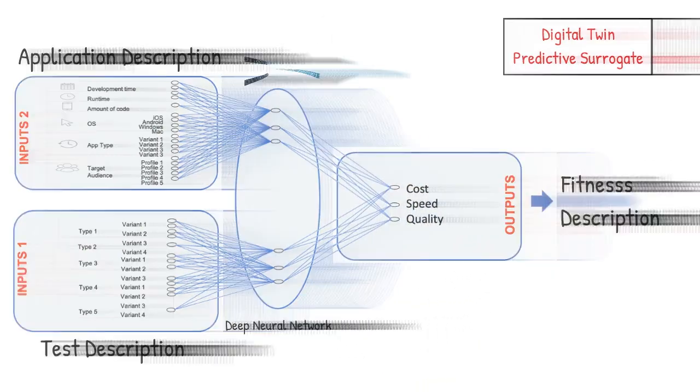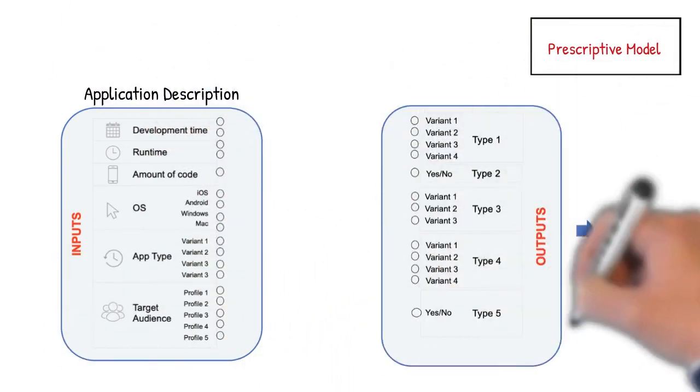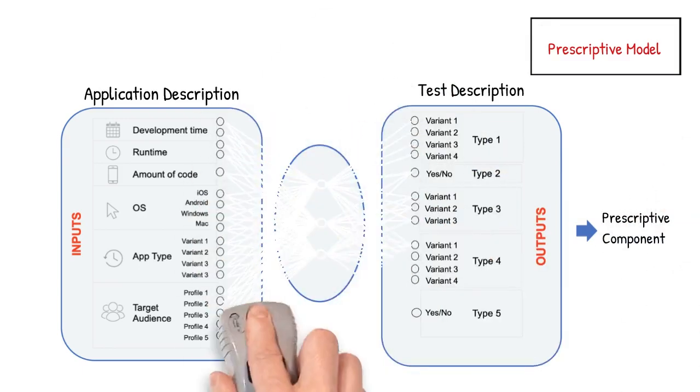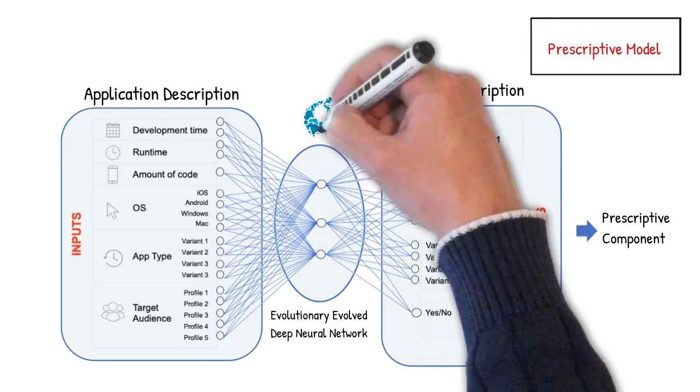For the prescriptive model, our goal is to create an optimal test description based on application data. To do this, we use evolutionary techniques to create and evolve deep neural networks using the cost, speed, and quality predictions of the surrogate model.